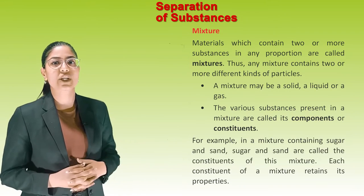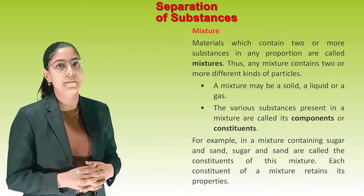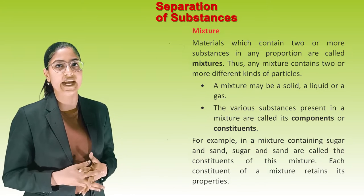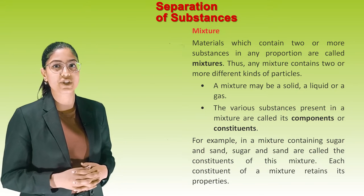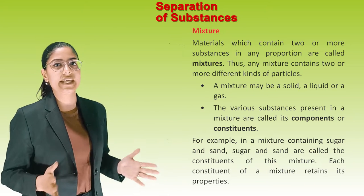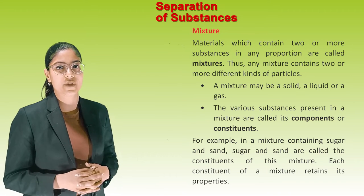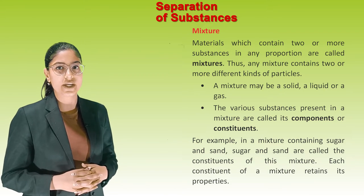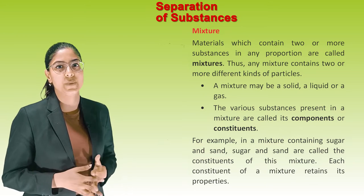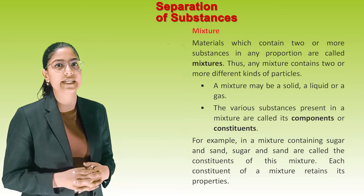Mixture: Materials which contain two or more substances in any proportion are called mixtures. Any mixture contains two or more different kinds of particles. A mixture may be a solid, a liquid, or a gas. The various substances present in a mixture are called its components or constituents. For example, in a mixture containing sugar and sand, sugar and sand are the constituents. Each constituent of a mixture retains its properties.